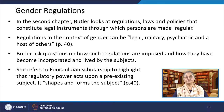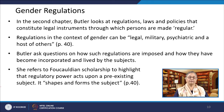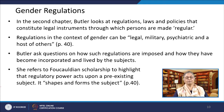In the second chapter, Butler looks at regulations, laws and policies that constitute legal instruments through which persons are made regular. Regulations in the context of gender can be legal, military, psychiatric and a host of others. Butler asks how such regulations are imposed and how they have become incorporated and lived by the subjects. She refers to Foucauldian scholarship to highlight that regulatory power acts upon a pre-existing subject — it shapes and forms the subject. In a regulated society, Butler finds that gender can become a mechanism by which notions of masculine and feminine are produced and naturalized. Inspired by Foucault's post-structuralist approaches, Butler notes that gender can also become the apparatus by which such regulations are deconstructed and denaturalized.